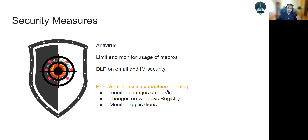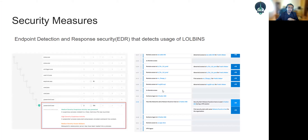Monitor changes on services — a new service starting, why a service went down, who shut it down. Monitor Windows Registry changes — why is a change being performed, what is being installed. Monitor applications. There are EDRs that detect the use of malicious PowerShell commands. Make sure you have proper EDRs to detect the usage of living-off-the-land binaries and scripts.